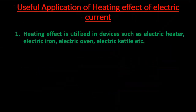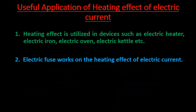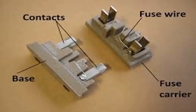The second useful application of heating effect is the electric fuse, which works on the heating effect of electric current. In household wiring, a fuse contains a short fuse wire with a low melting point. When a large current flows through the fuse wire, it melts and breaks the circuit, preventing further flow of large current and saving the other electrical appliances. This is how a fuse works as a very useful safety device.